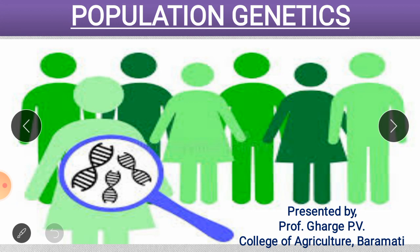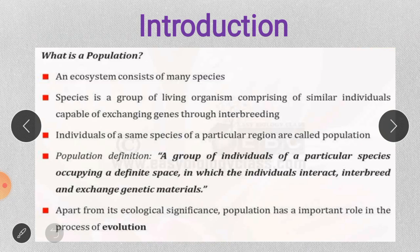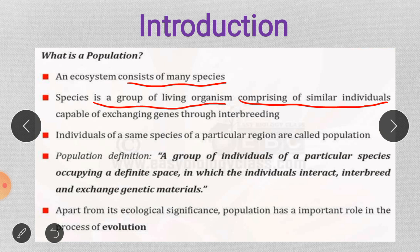So what is meant by population? An ecosystem consists of many species. There are so many types of ecosystems such as a pond ecosystem, terrestrial ecosystem, and aquatic ecosystem. Each ecosystem consists of many species. A species is nothing but it is a group of living organisms comprising similar individuals. A species consists of a group of organisms, a group of individuals having the same genotype, and they are capable of exchanging genes through interbreeding.